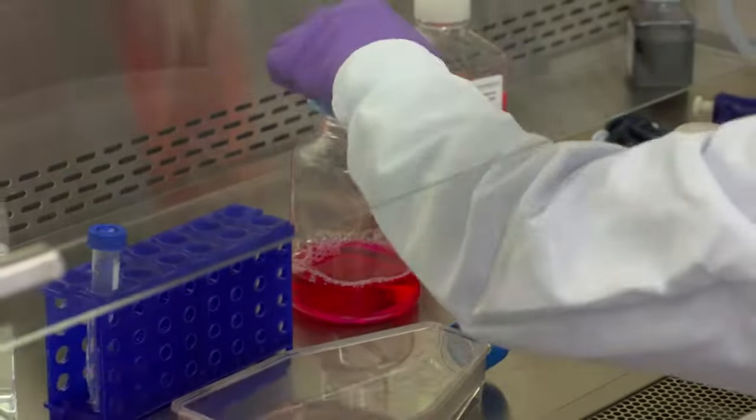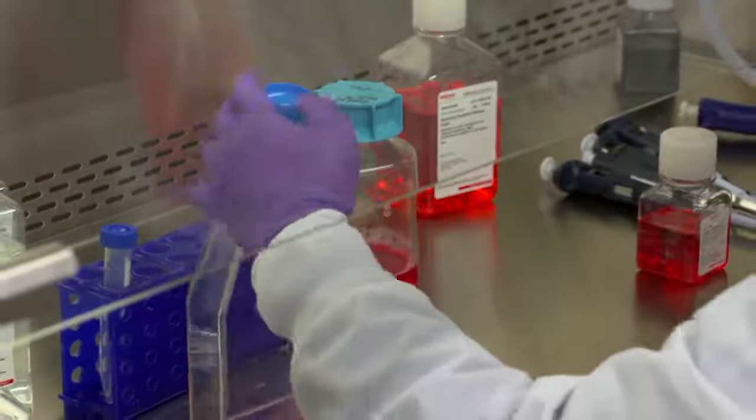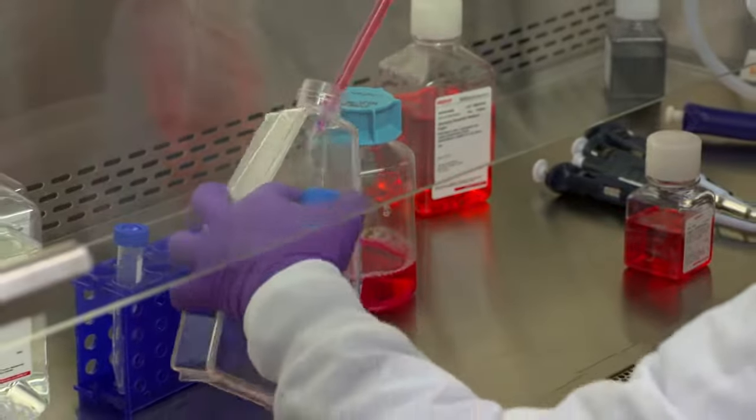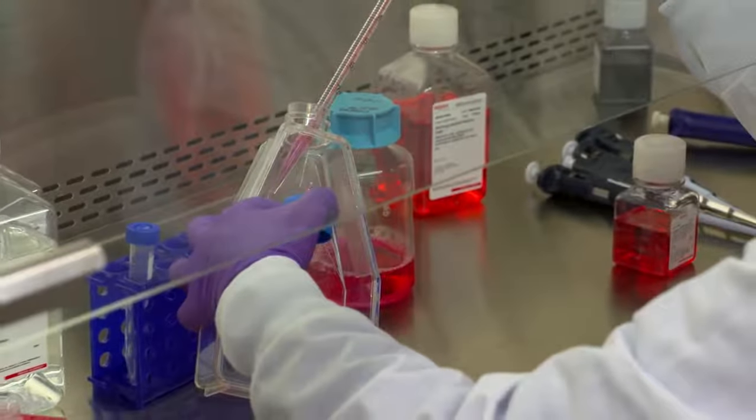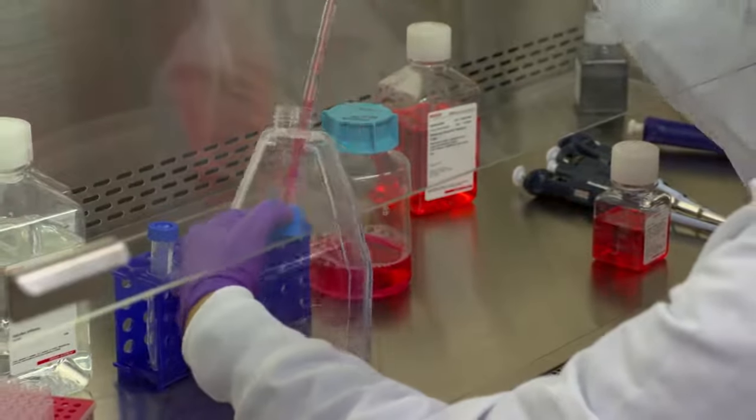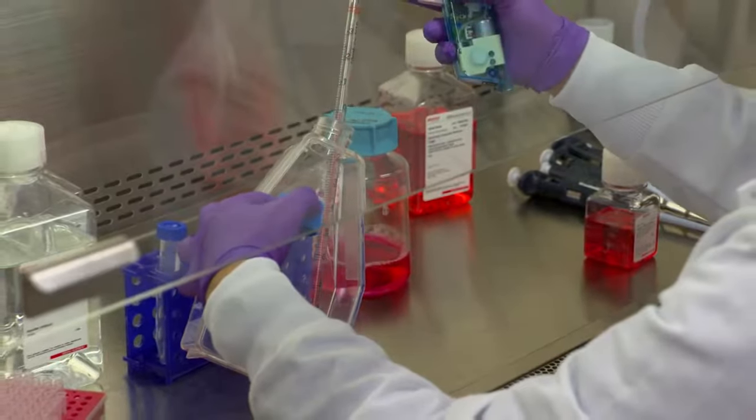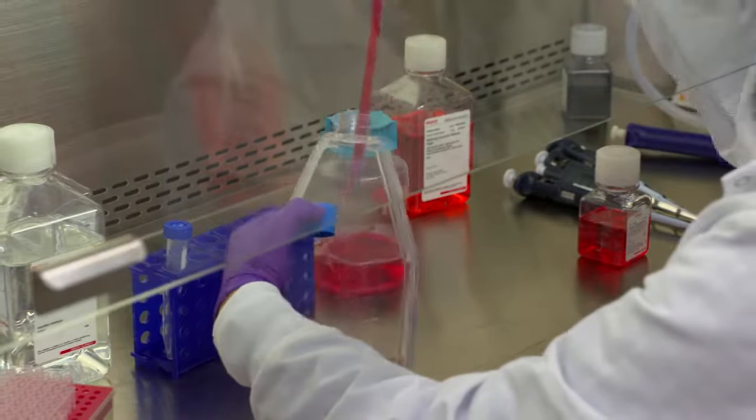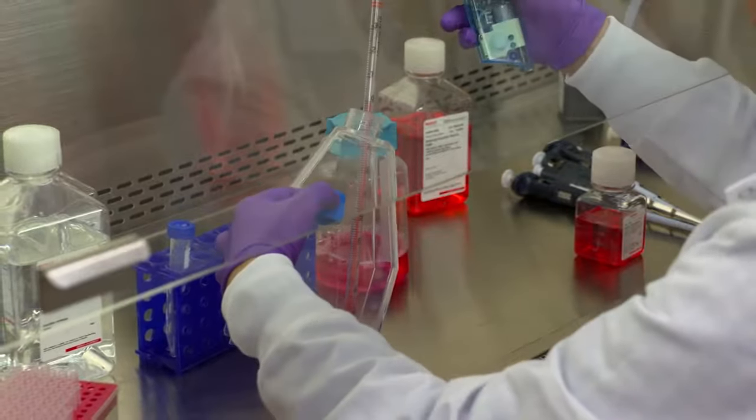When greater than 90 percent of cells are detached, put the flask in standing position and neutralize the dissociation reagent with serum containing medium appropriate to the cell line in culture. Usually 1x trypsin volume equivalent is sufficient to neutralize trypsin.